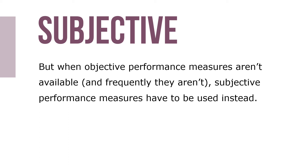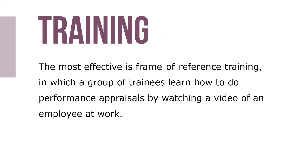When objective performance measures aren't available — and frequently they aren't — subjective performance measures have to be used instead, which require someone to judge or assess a worker's performance. The second approach to improving measurement is rater training. The most effective is frame of reference training, in which groups of trainees watch a video of an employee at work, evaluate that person's performance, then compare their evaluations with those of an expert trainer. The expert explains the rationales behind their evaluations, and the process is repeated until differences between trainee and expert evaluations are minimized.